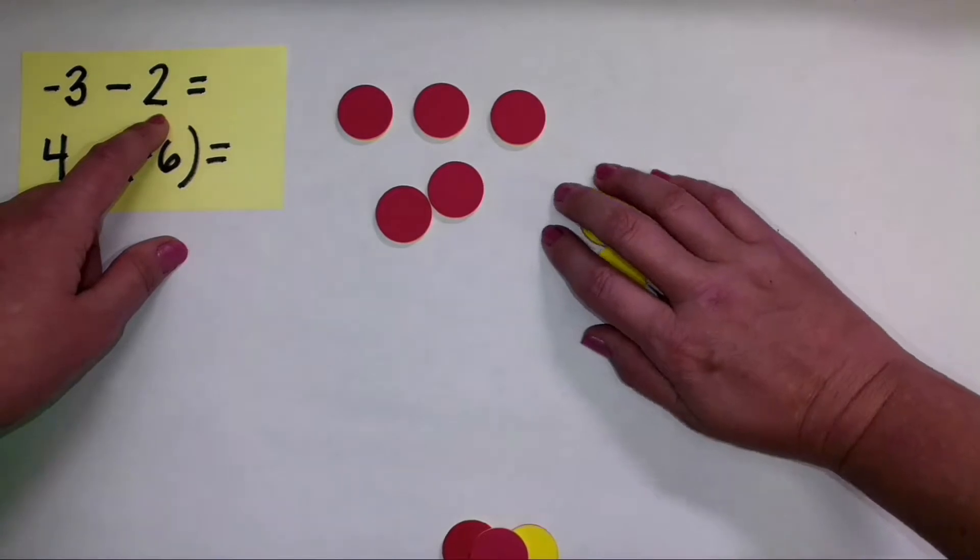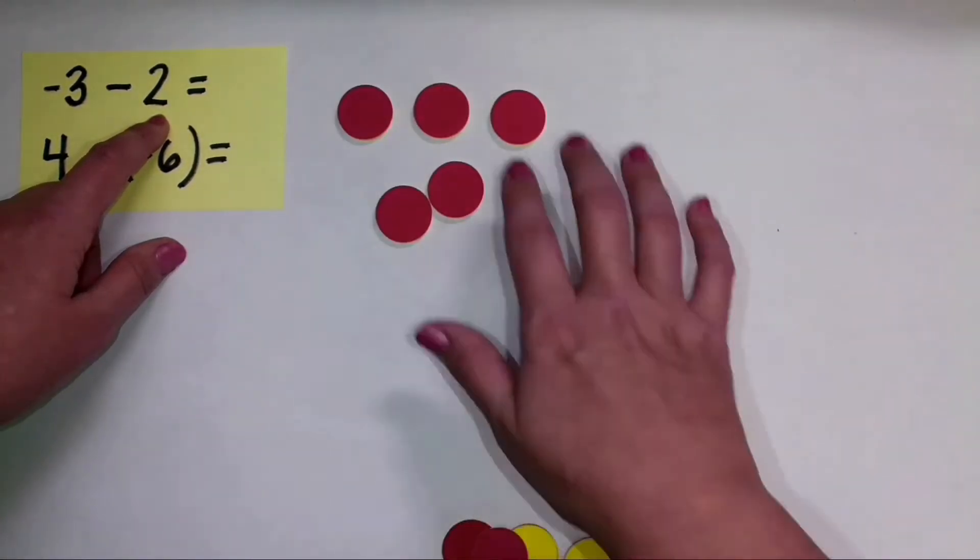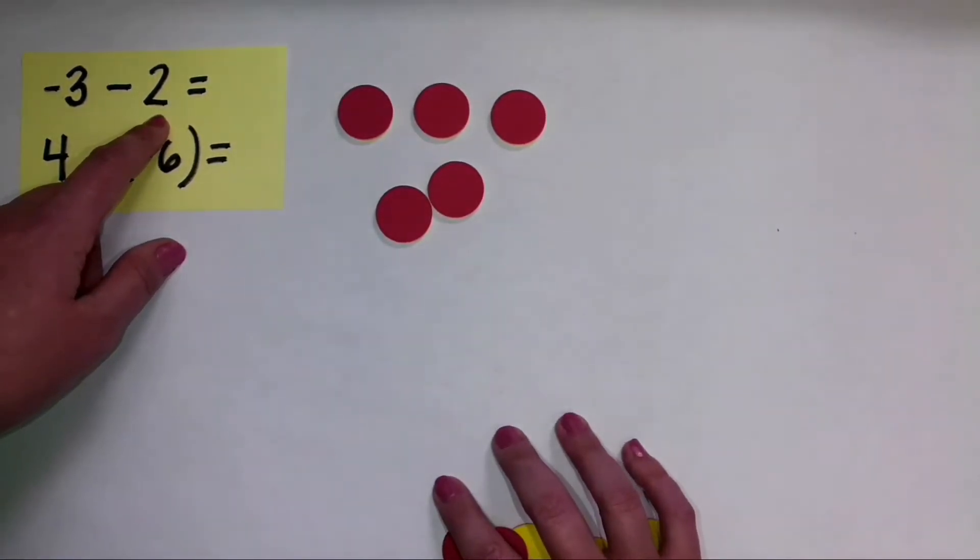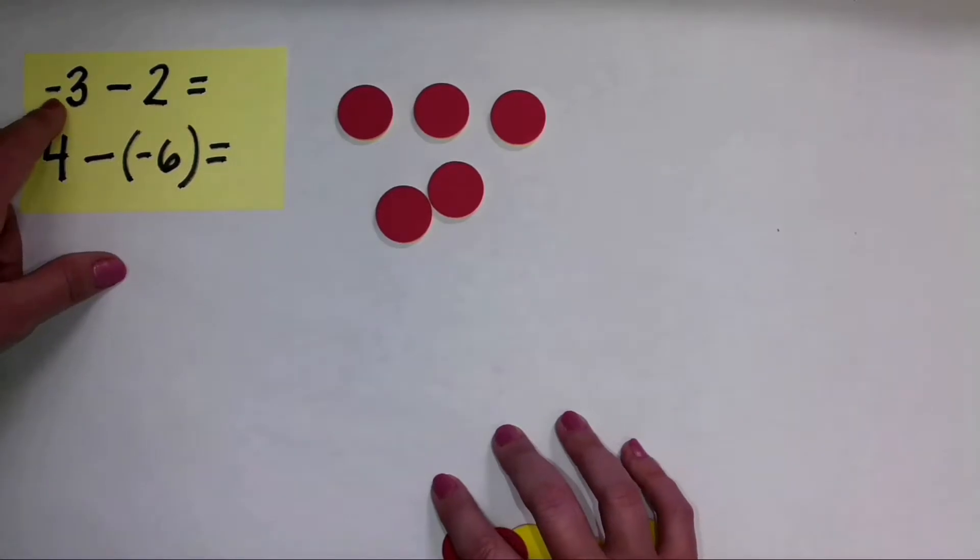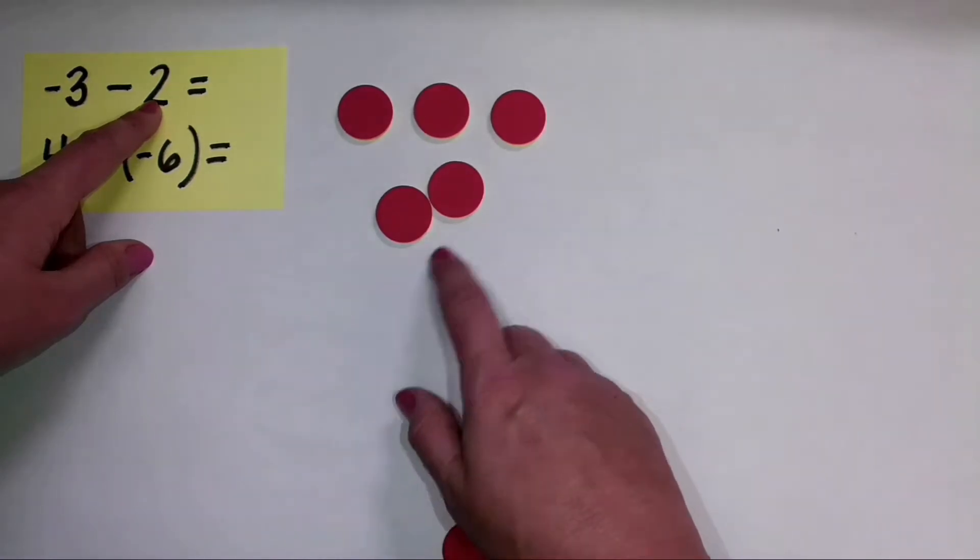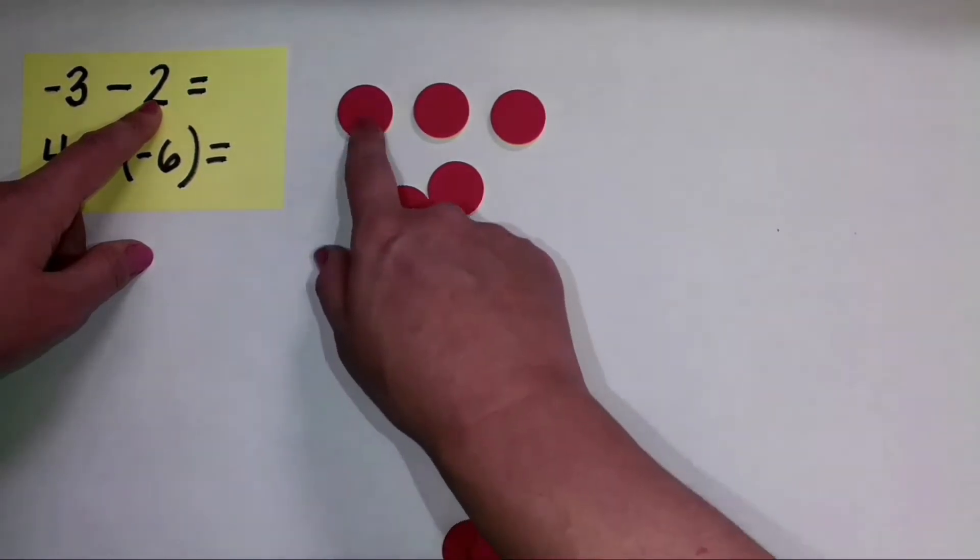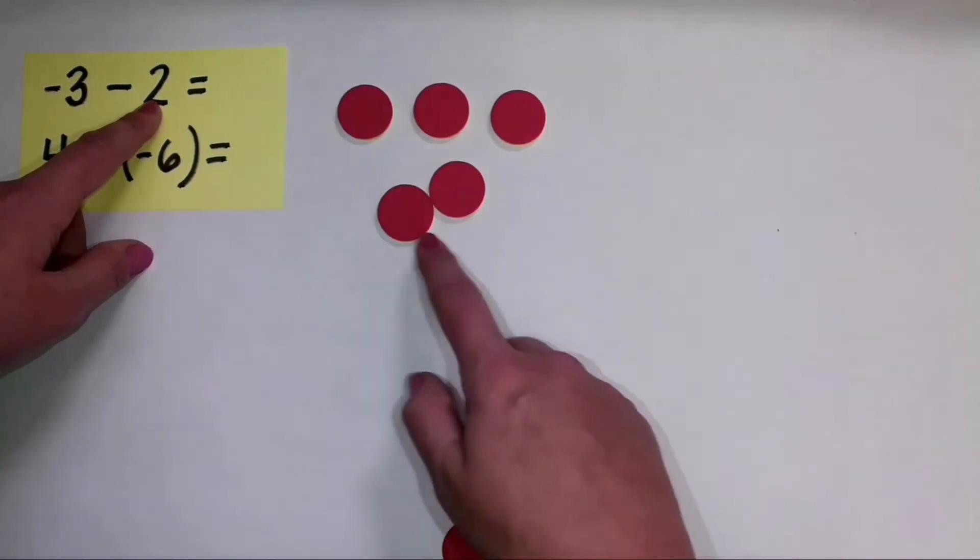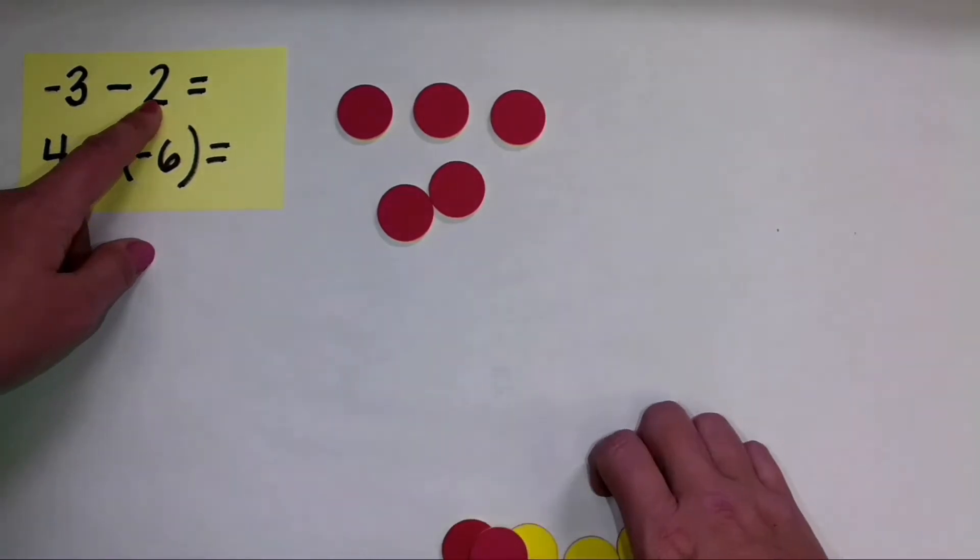So I'm going to subtract those by moving them off of my subtraction space that I've been using. So when I have negative three minus positive two, our difference is negative five. One, two, three, four, five. And it's negative because all of these counters are red.